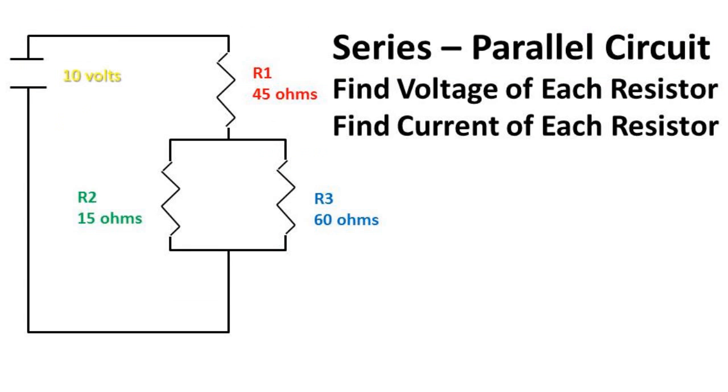So we have a circuit with a 10 voltage source connected to a resistor by itself and two resistors in parallel. We need to find the voltage of each resistor and current of each resistor.